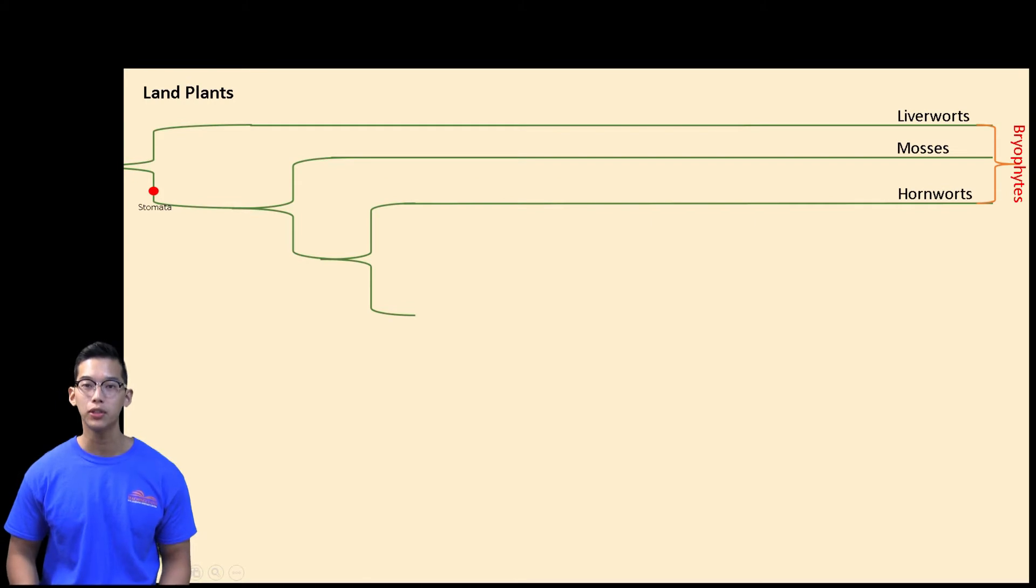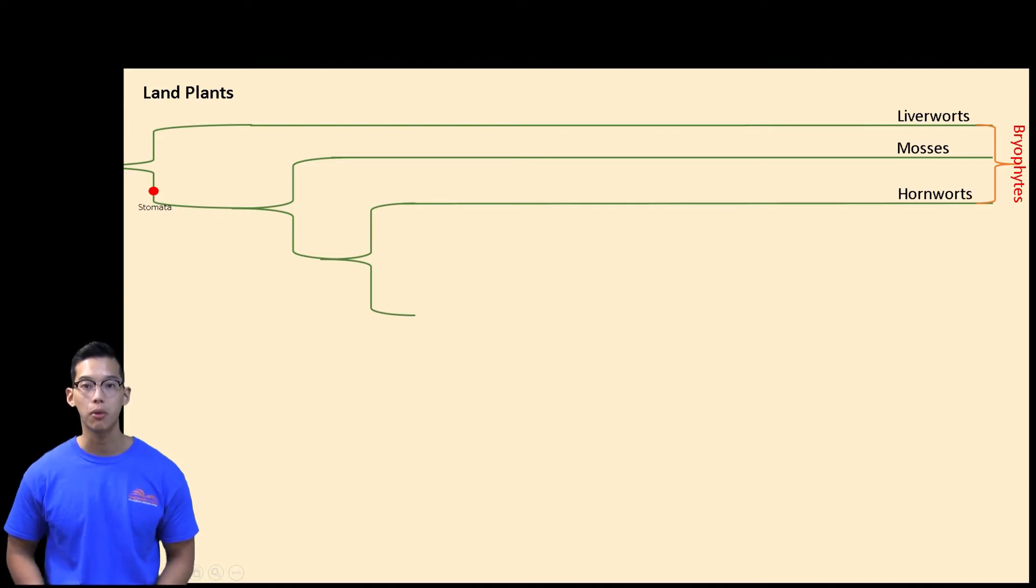The first group of land plants that we'll be talking about is our bryophytes. Our bryophytes consist of our liverworts, our mosses, and our hornworts. Our bryophytes are also known as our non-vascular land plants because they lack a true vascular transport system. Our mosses and our hornworts are the only bryophytes that contain a stomata, while our liverworts do not have a stomata.